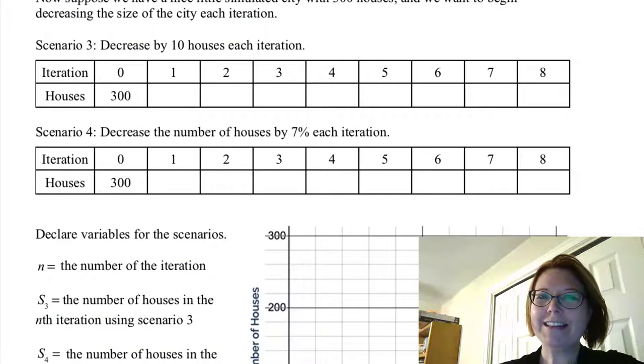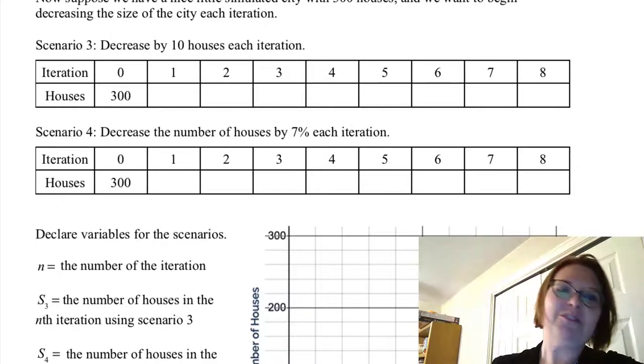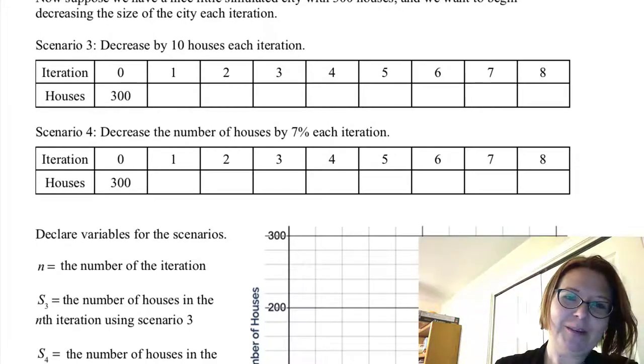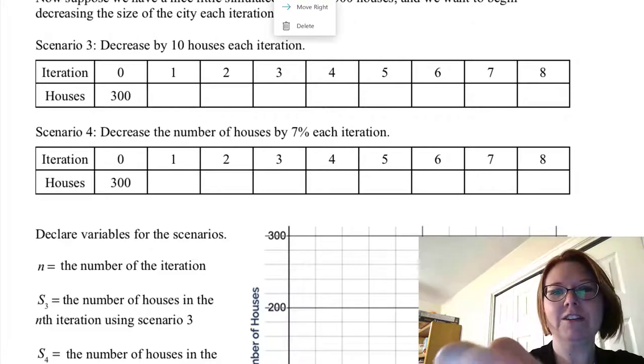Let's just do one more. Let's suppose we have a nice little simulated city that's got 300 houses now and we want to begin decreasing the size of the city each iteration. So let's start by decreasing by 10 houses each iteration.